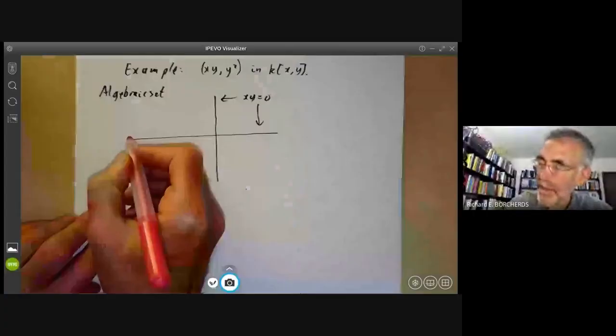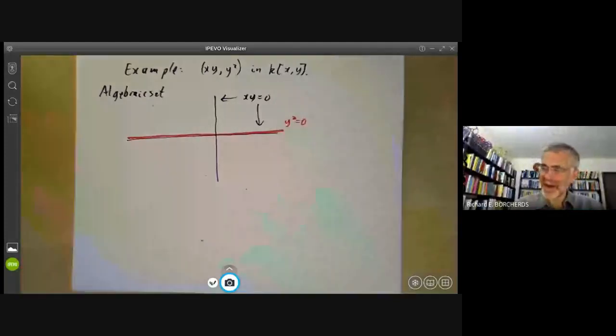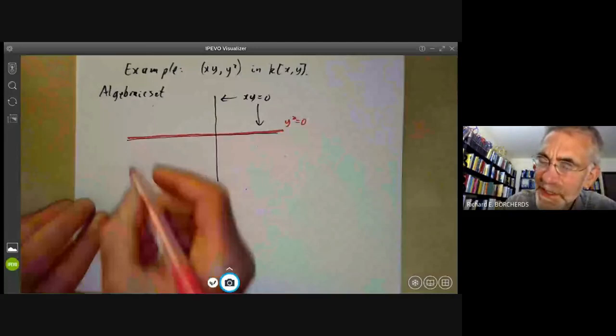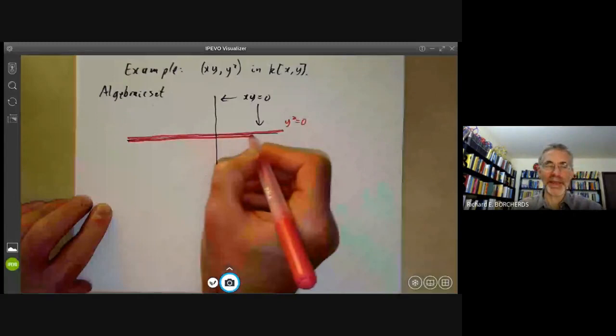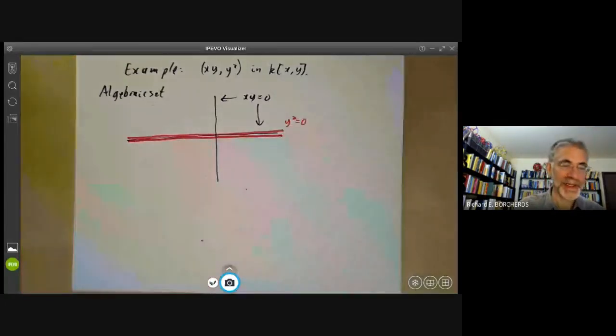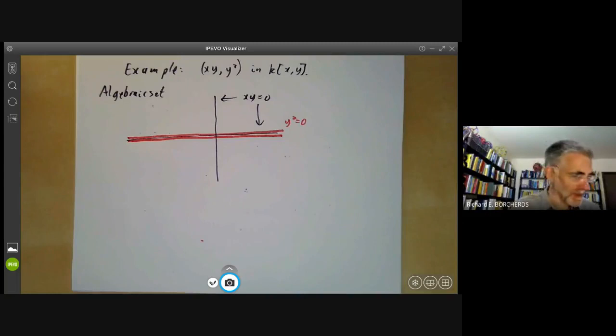The set y squared equals zero is just the same as y equals zero, but it's not quite the same. Somehow it's a sort of slightly thicker version of y equals zero. It's the y-axis doubled up in some informal sense. I mean, it is just the y-axis, but you should think of it as being a sort of rather thick version of the y-axis.